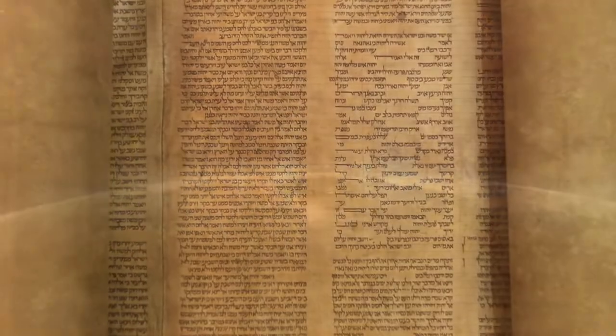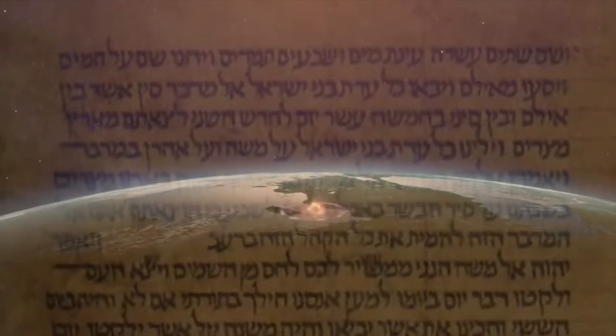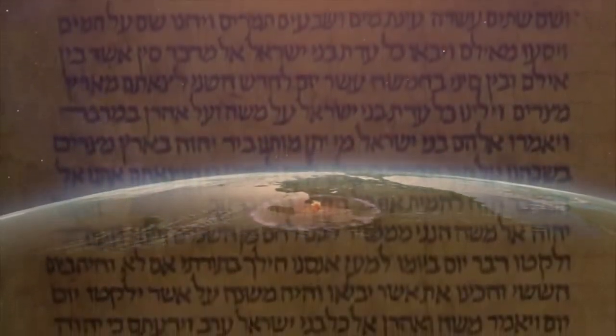The ancient writing of the Mahabharata describes what many experts theorize could have been some kind of nuclear attack on a prehistoric people.